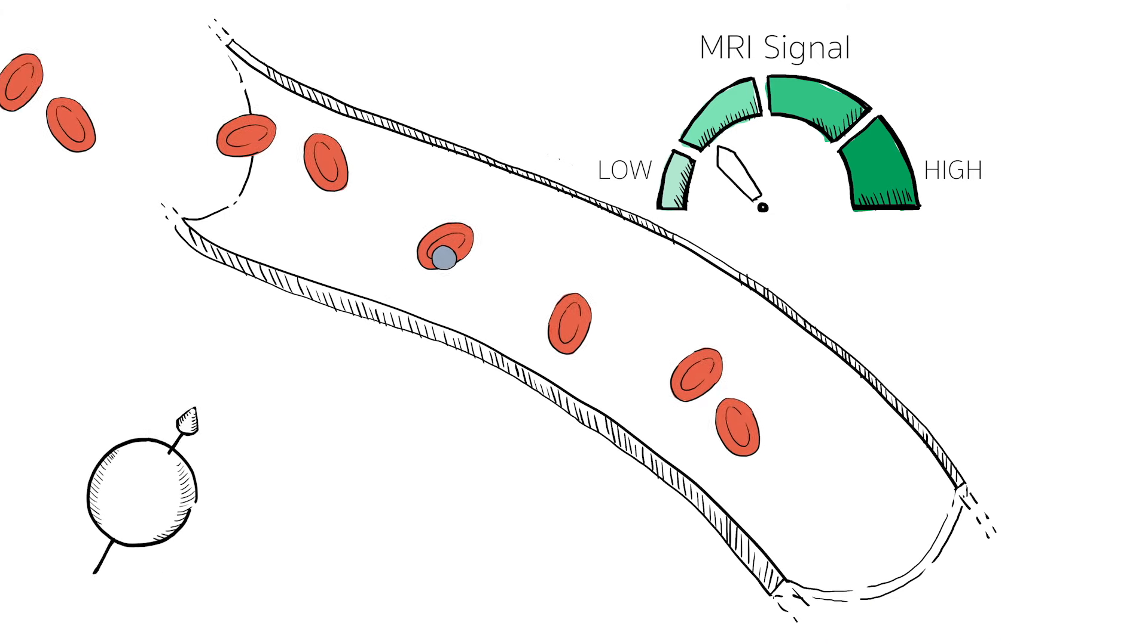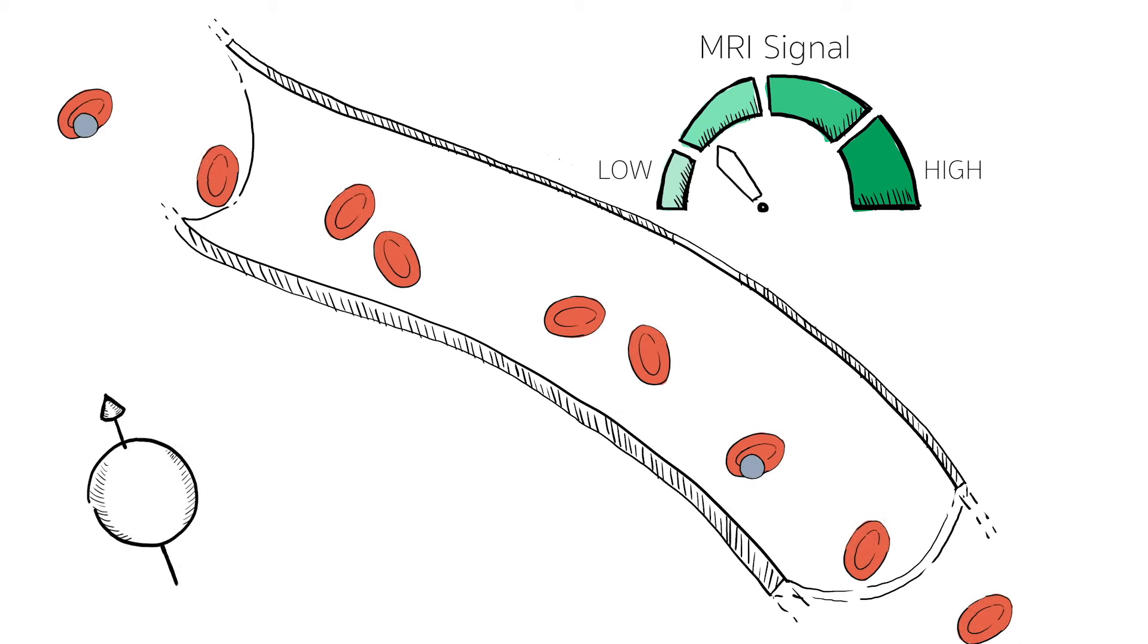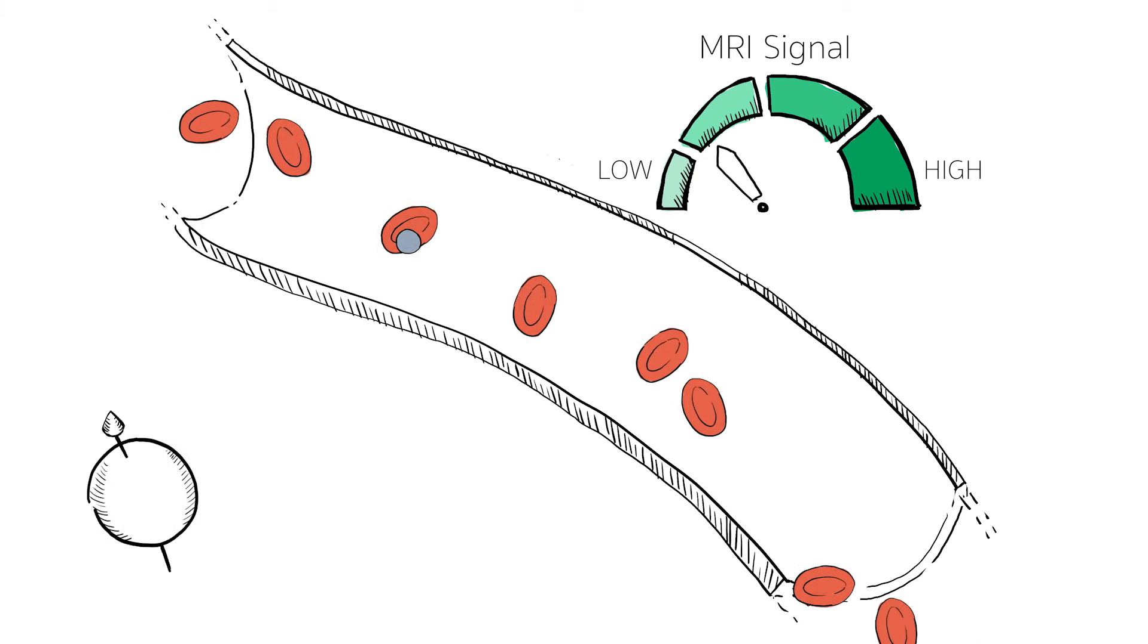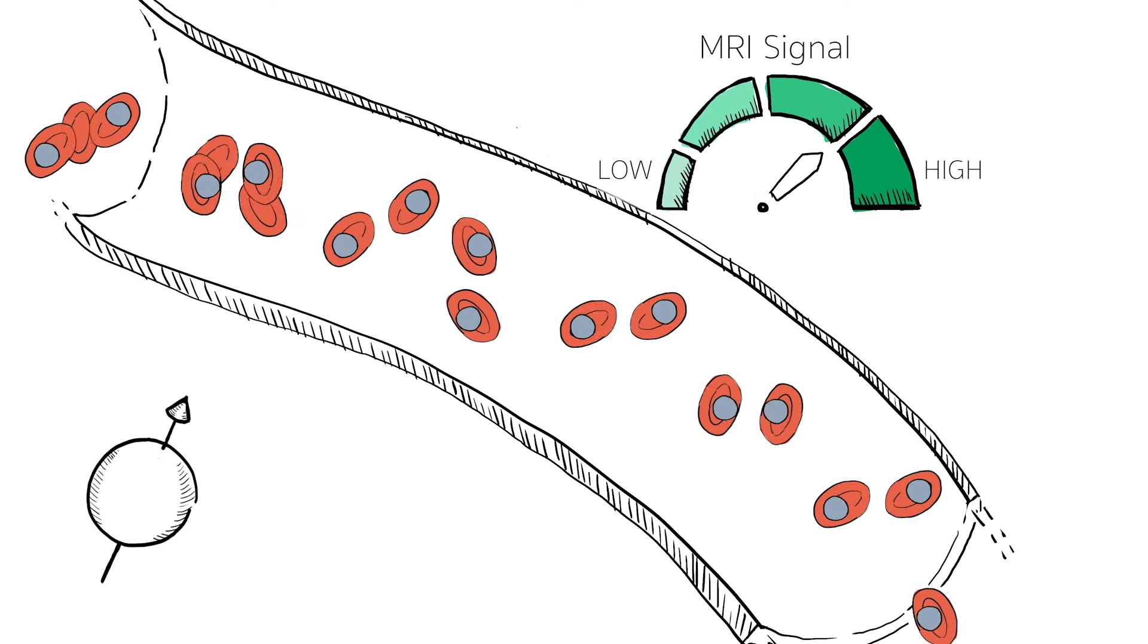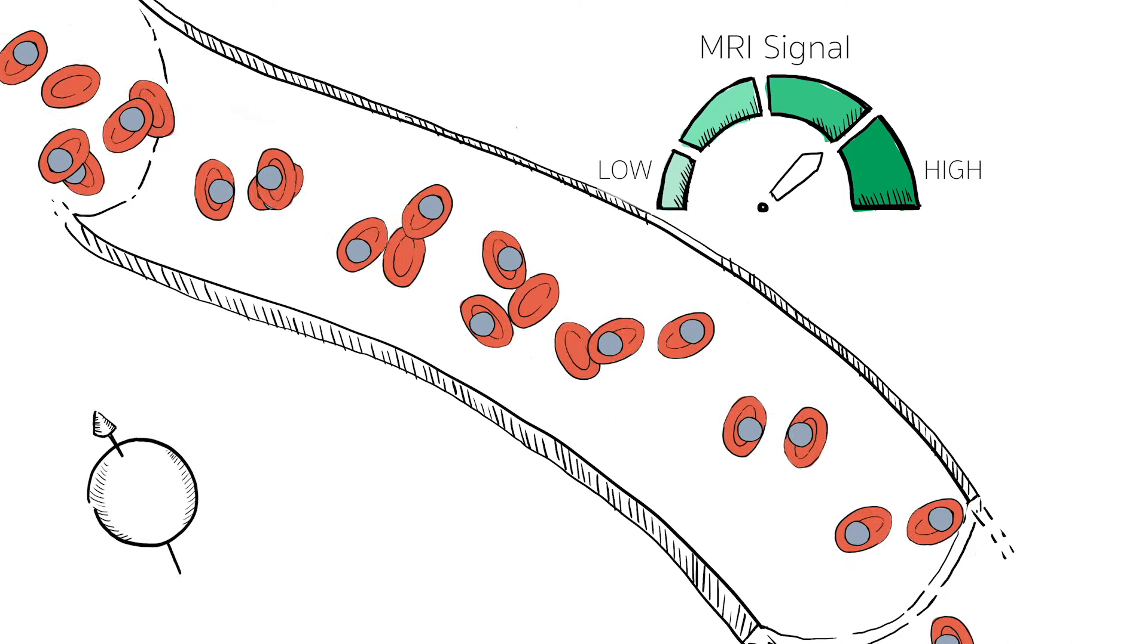When there are fewer red blood cells carrying oxygen, the signal we detect with the MRI scanner is lower. When there are a lot of red blood cells carrying oxygen, the signal detected by the MRI scanner is higher.